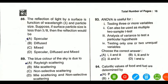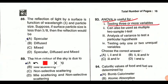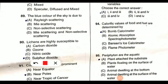Question 93 is from ANOVA — analysis of variance. ANOVA is useful for: testing three or more variables — correct; can also be used as multiple two-sample t-tests — correct; analysis of variance to test a particular hypothesis — correct; testing only one or two unequal variables — not correct. So statements one, two, and three are correct for ANOVA. Option A is the correct answer.